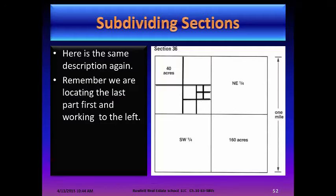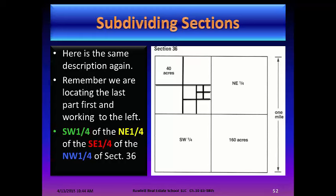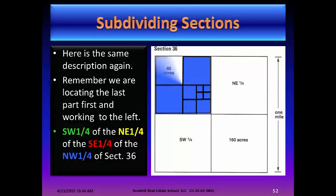Here's the same description again — remember, locate the last part first and work to the left. Starting with the blue: the northwest quarter of Section 36. Then the red: the southeast quarter. Then the yellow: the northeast quarter. And the green: the southwest quarter.